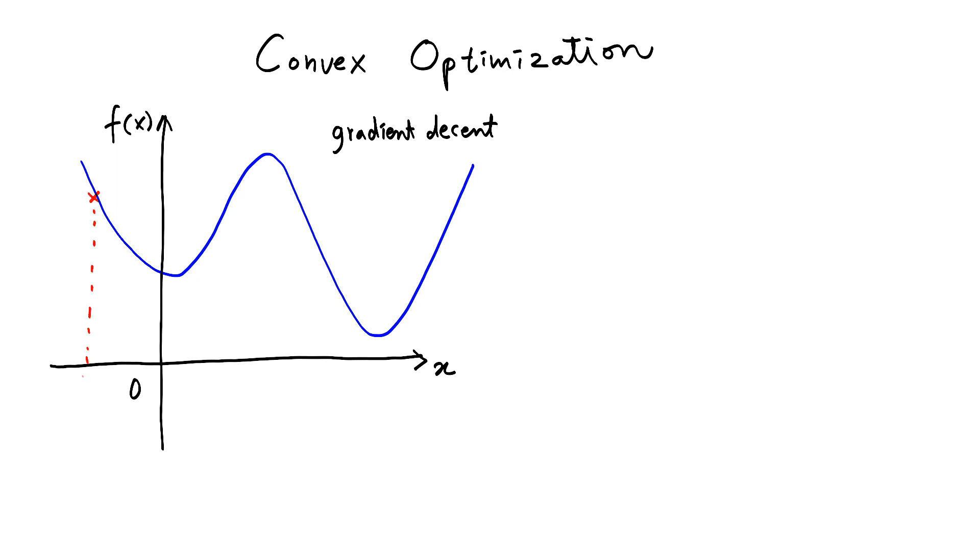This is our initial guess for this optimal x and using gradient descent with a proper step size you may reach this point. The problem is that this minimum is not global minimum and this minimum is actually called a local minimum.